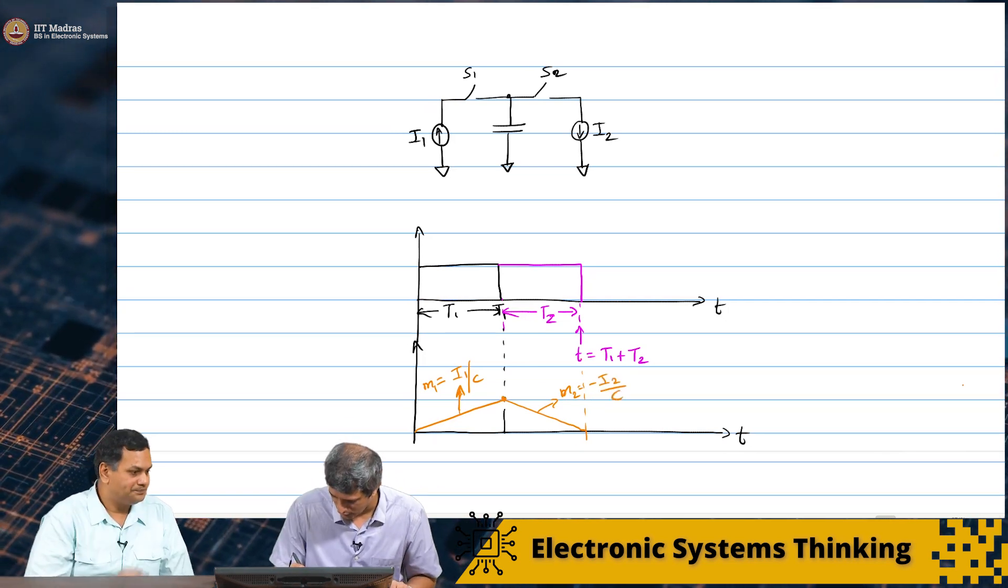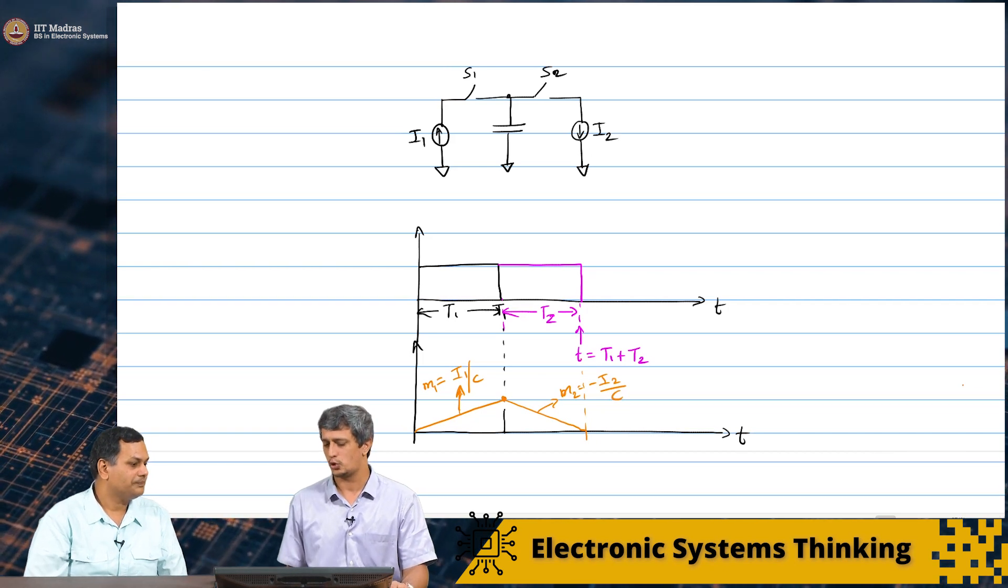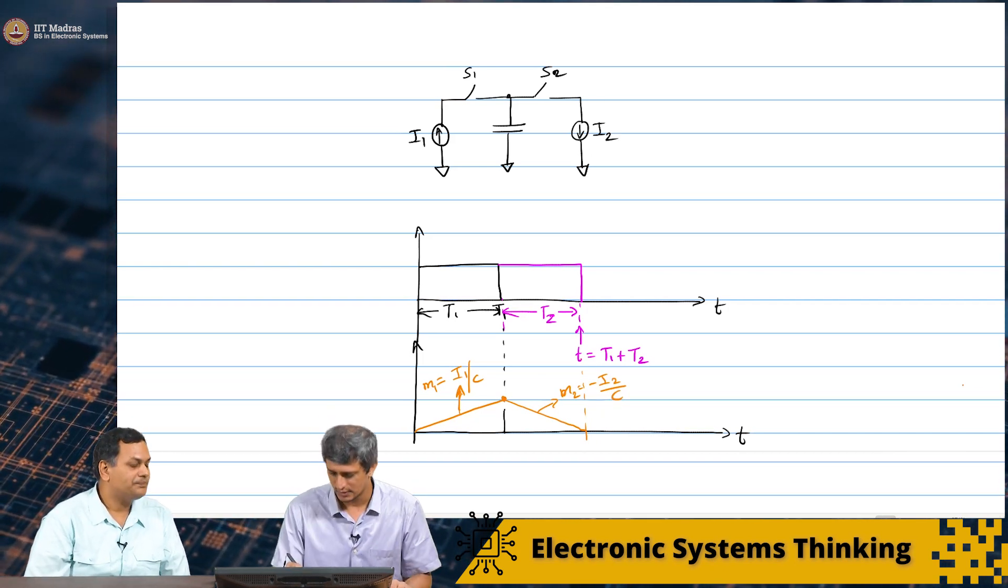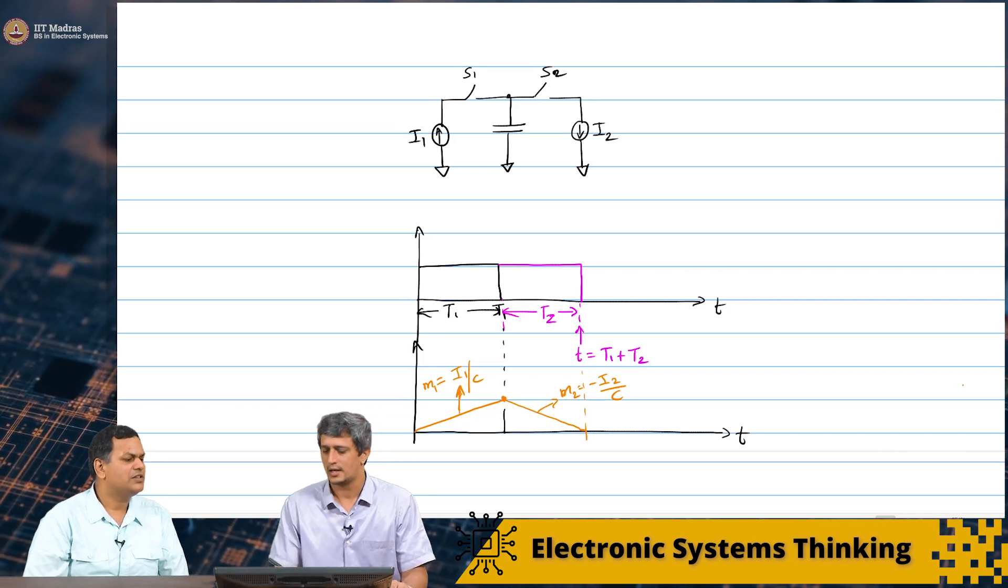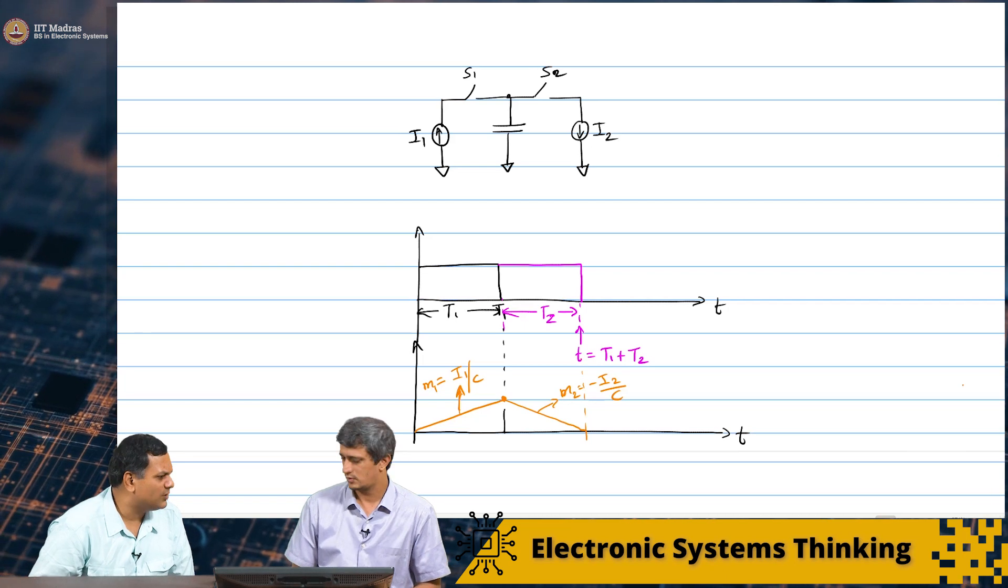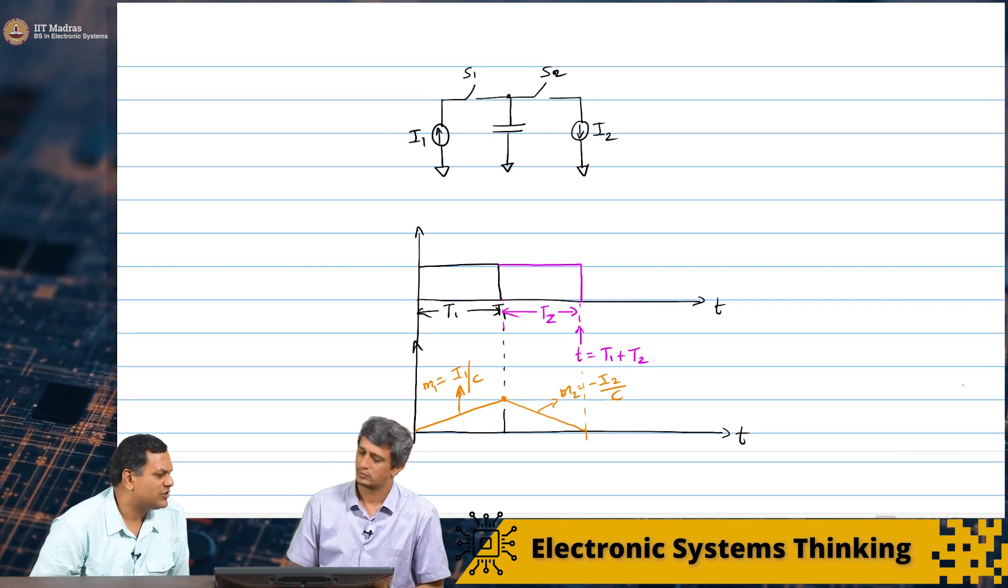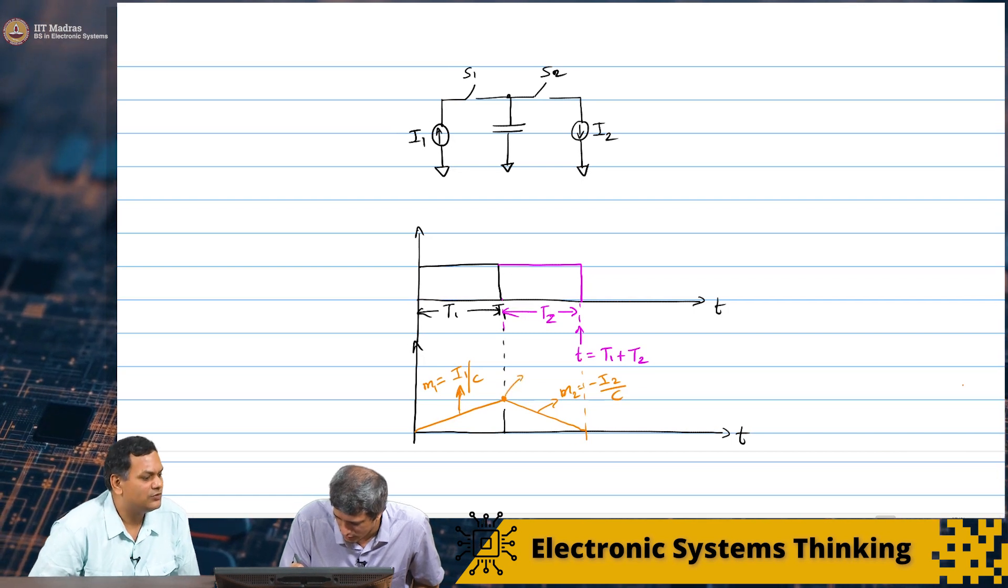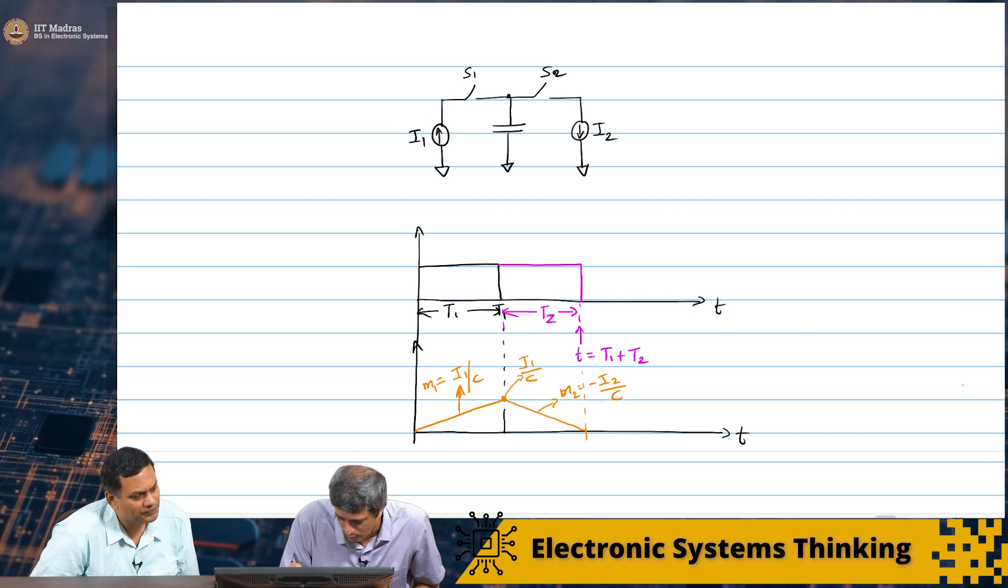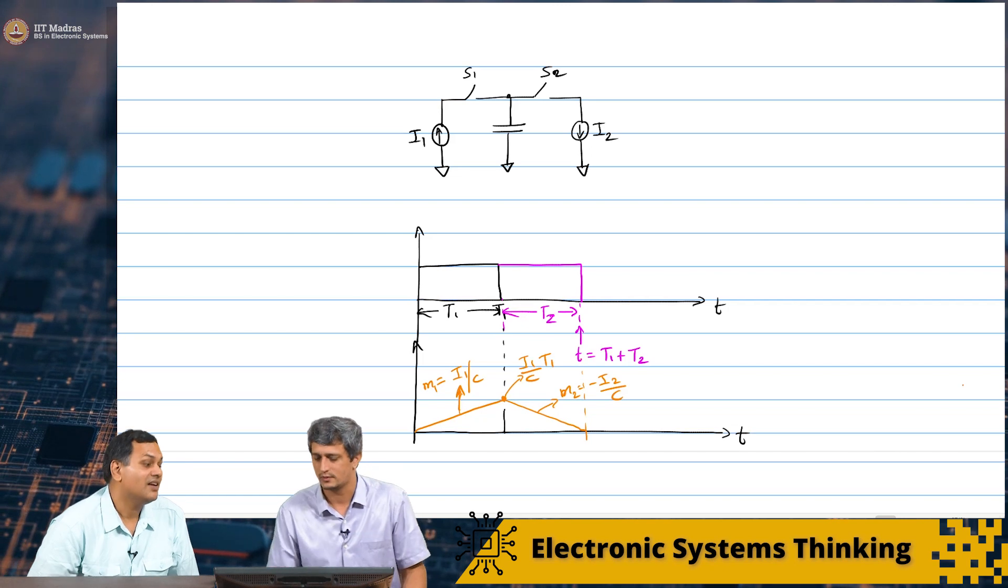So, what is first of all, this final value that you get here? This value is, it is going to charge up. So, that should just be, because we know the slope and initial point is zero. The equation should just be I1 by C times T1. So, this will be I1 by C times T1.